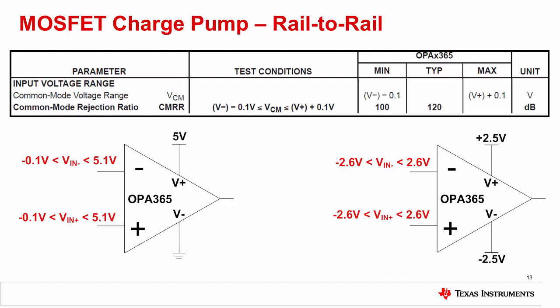Another method for implementing a rail-to-rail amplifier is to use an internal charge pump. The main advantage of the charge pump is that the amplifier will no longer have crossover distortion because only one differential input pair is present. The linear input voltage range of the device shown, the OPA365, extends 100 millivolts past each supply rail. Notice the high CMRR of 120 dB for the OPA365 compared to the OPA703, a complimentary CMOS device which has a CMRR of 90 dB.